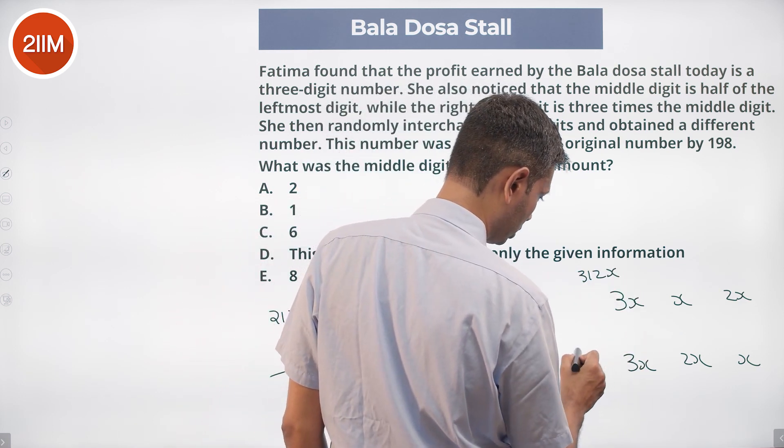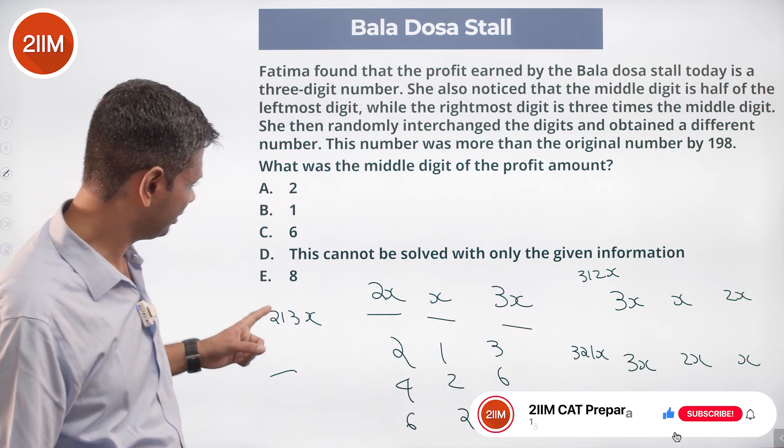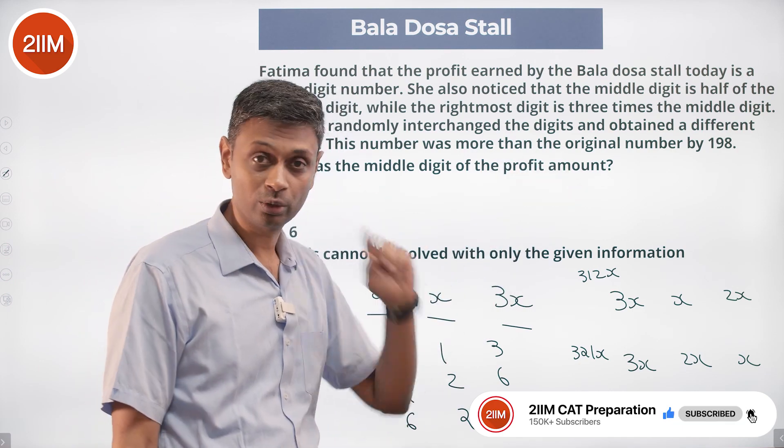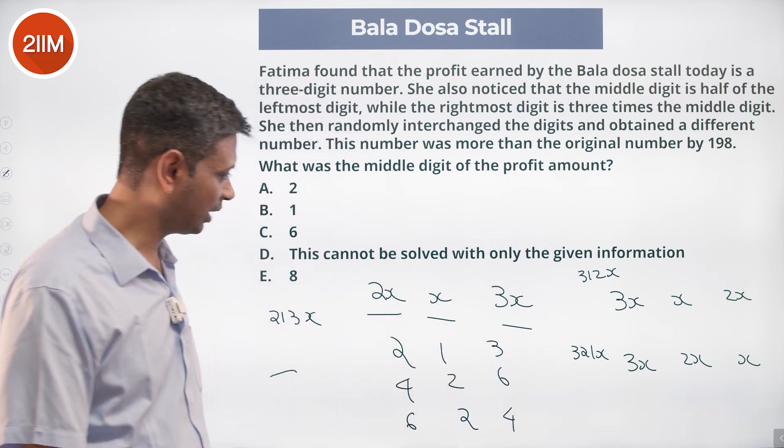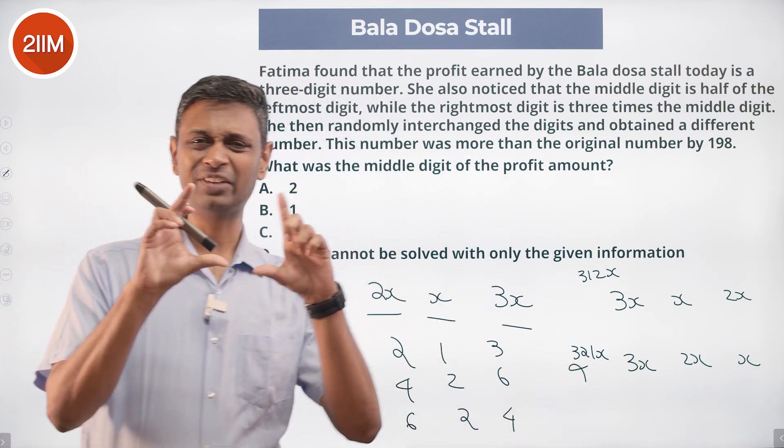Or 321x. Straight away notice these two, the difference is 99. 198 is 99 into 2. These two, the difference is 108x. That cannot be that, so this is ruled out. The digits are effectively reversed.